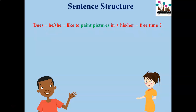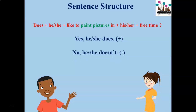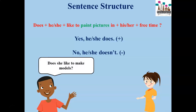This is yes or no questions. If we want to ask a yes or no question, we have to start with the auxiliary verb 'do' or 'does.' After 'does,' we use the verb in the infinitive form. If we agree, we say 'yes, he does' or 'yes, she does.' If it is negative, we say 'no, he doesn't' or 'no, she doesn't.' For example: Does she like to make models? Yes, she does.